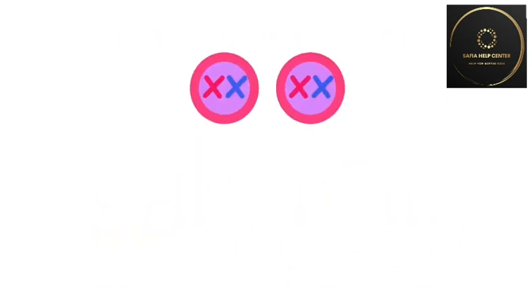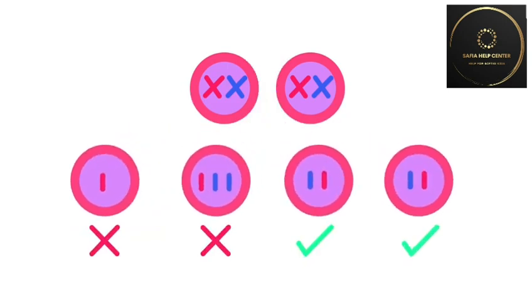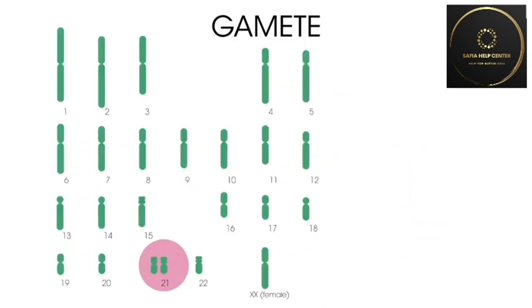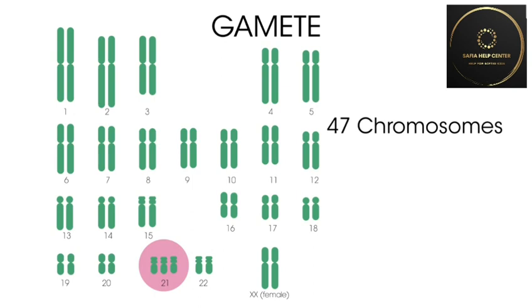However, sometimes the chromosomes are not separated or divided up how they should be, and this is called non-disjunction. One example of non-disjunction in humans is the condition known as Down's syndrome. In this case, the 21st chromosome fails to segregate and the gamete produced possesses 24 chromosomes — 23 plus an extra copy of chromosome 21. The fusion of this gamete with a normal one results in the offspring having 47 chromosomes.